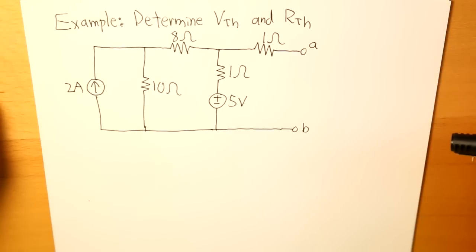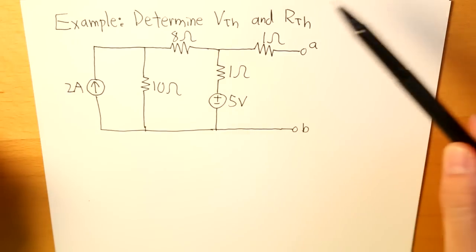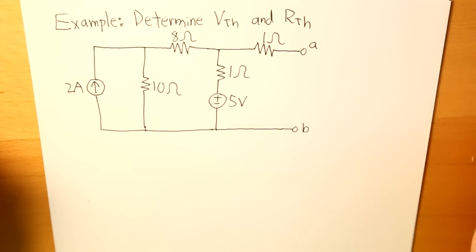Right here, we have a Thevenin equivalent example, and the question asks us to determine what Vth and Rth are.